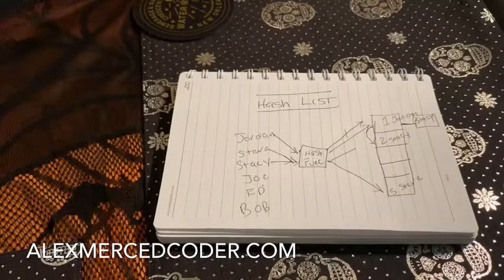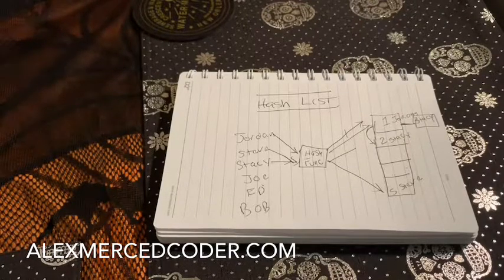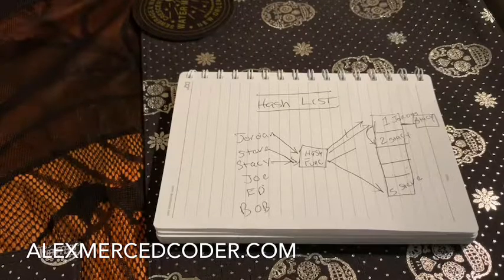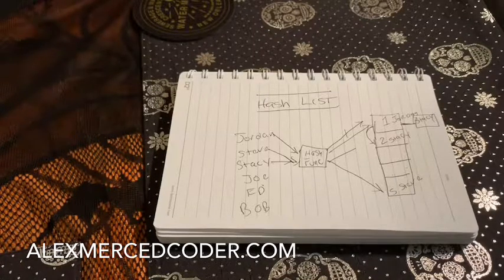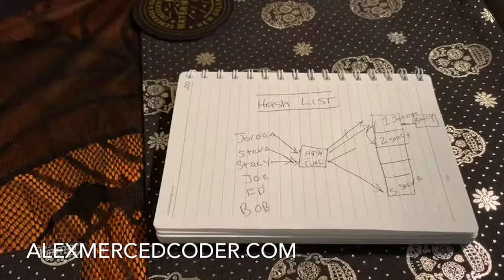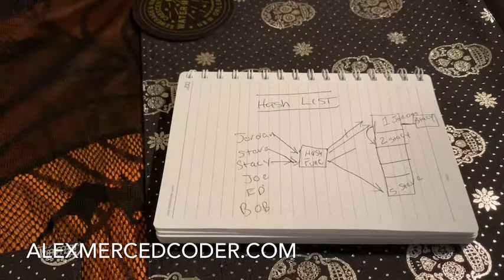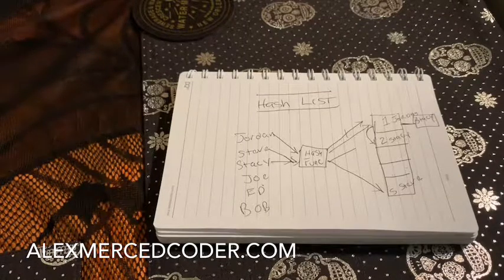You could decide not to hash at all and do what's called a direct access table, where you just put everyone on a table. The problem is if you're talking about millions of records, that's going to take up a lot of memory because you're keeping each record completely separately — not using any way to condense the data or make access quicker. So that's not necessarily the best way to do it.